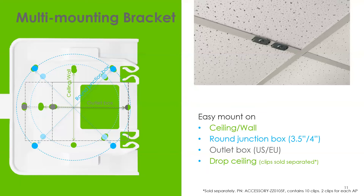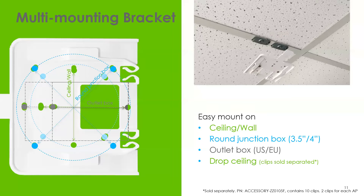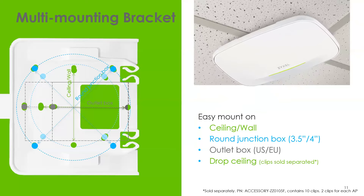Just like all of our other business-class access points, it uses a multi-function mounting bracket. This bracket is designed to fit on a wall outlet or a round or rectangular junction box, with screw holes for different standardized outlets. It also works with our T-bar clips — sold in packs of five. Those clip onto the T-bar, the bracket screws into those, and then the access point slides on and snaps in place, holding it there securely.